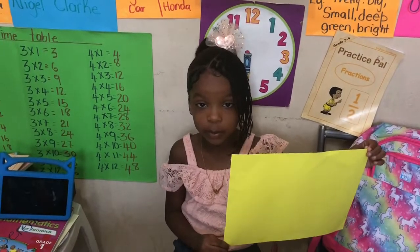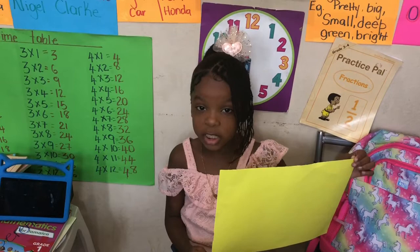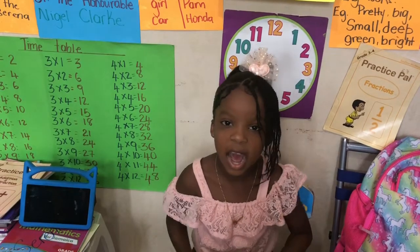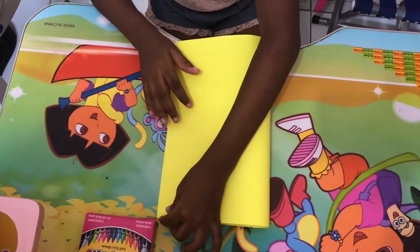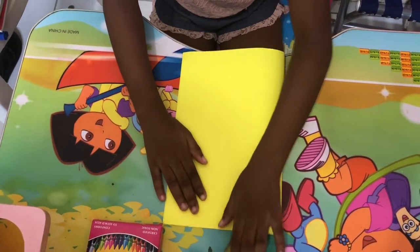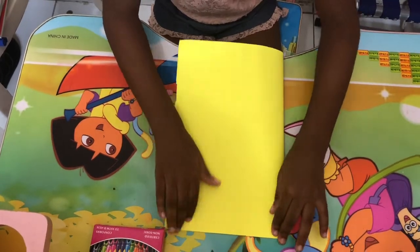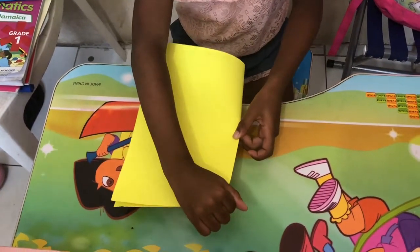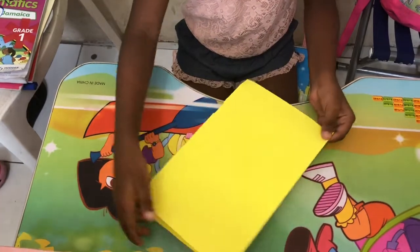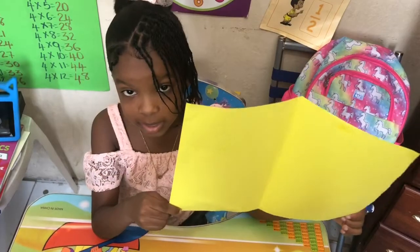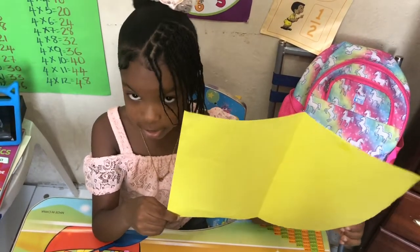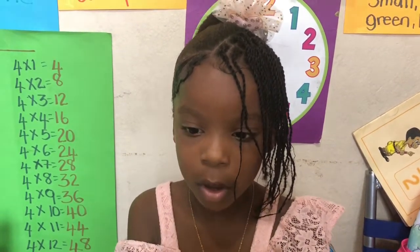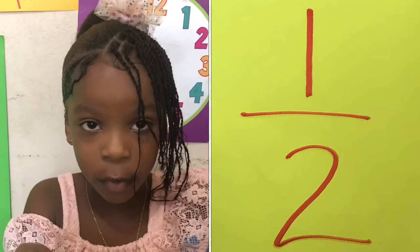Here I have a shape. I would like to share half of my shape with my cousin Kiana. I am now going to fold my shape in half. Notice both sides are the same. After folding my shape in half, I now have two halves — one for Kiana and one for myself.